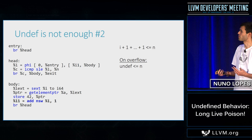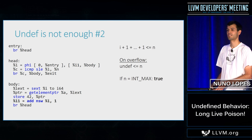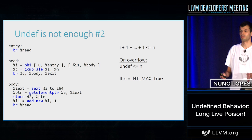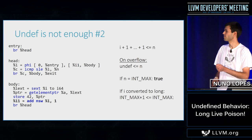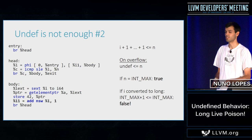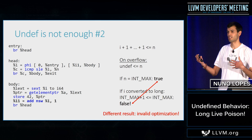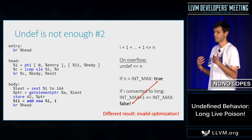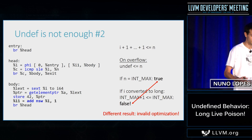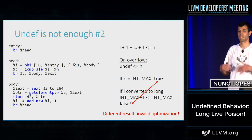On overflow we would get 'undef less than or equal to n'. If n is INT_MAX, this comparison is always true because all numbers are smaller than or equal to INT_MAX. But if i was converted to long, then INT_MAX plus one is actually representable, and the comparison will be false. Again we get different results, so the optimization would be wrong. We cannot justify widening induction variables by saying NSW is undef. But poison makes this optimization work and you can get your 39% speedup.